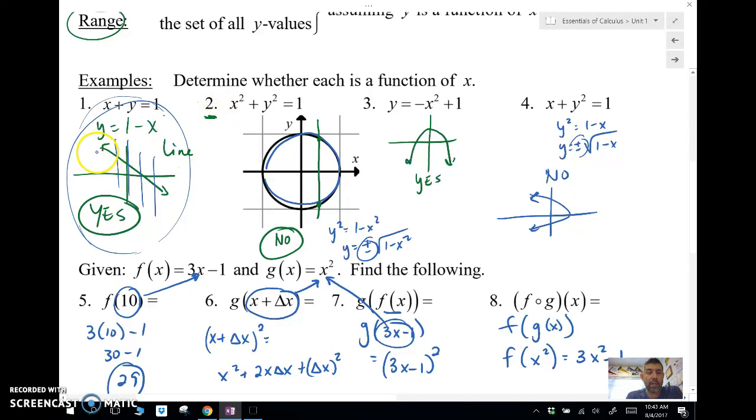Number two is a circle. Now, this was already not a function. So if it's not a function, then its inverse is not going to be a function. Let's take a look. In this case, it does not pass the vertical line test. It's not a function. It does not pass the horizontal line test because it crosses through twice. So its inverse is not a function.